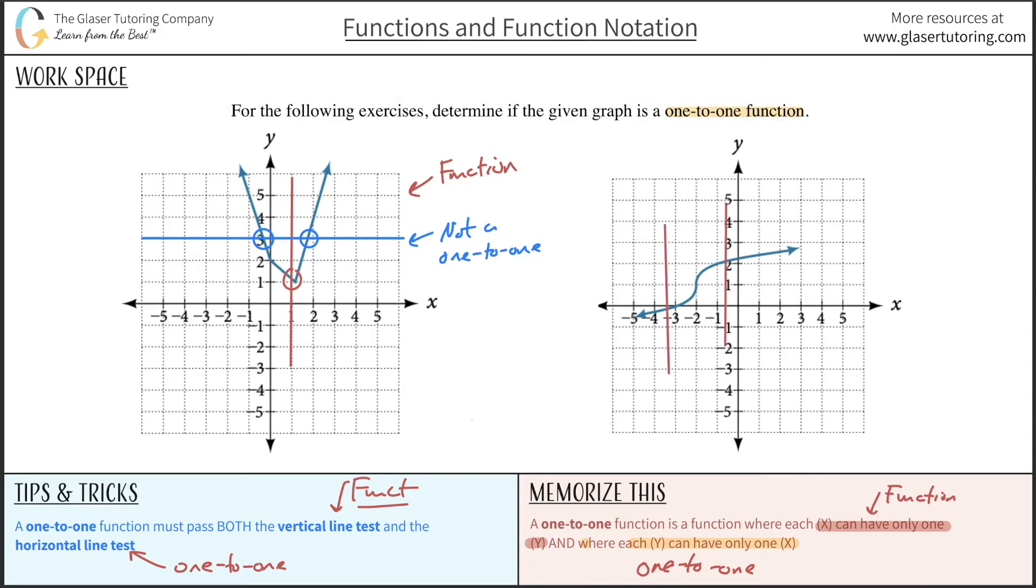Just start looking at horizontal lines. Is there any way that this horizontal—excuse me, I said horizontal—let's draw vertical lines. Vertical lines, is there any way possible that this vertical line will intersect the graph in more than one location no matter where I draw it? No. So this does pass the vertical line test. Therefore, it is a function.